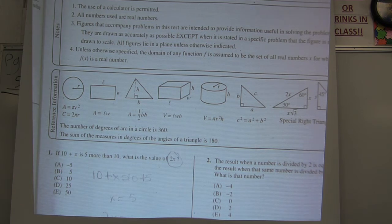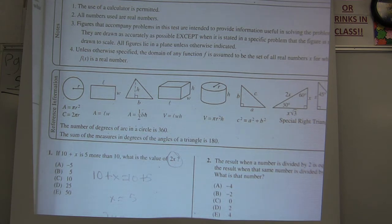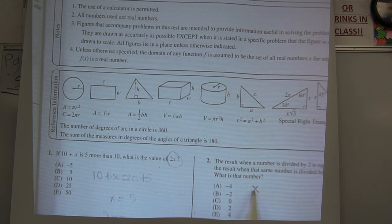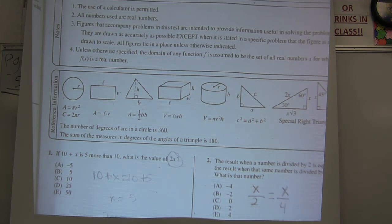Okay, let's see, number two. The result when a number is divided by 2 is equal to the result when the same number is divided by 4. Okay, I'm going to let x be the number, and I represent division by a fraction. The result when a number is divided by 2 is the same as the result, the same number, so I'm going to use x again, is divided by 4.